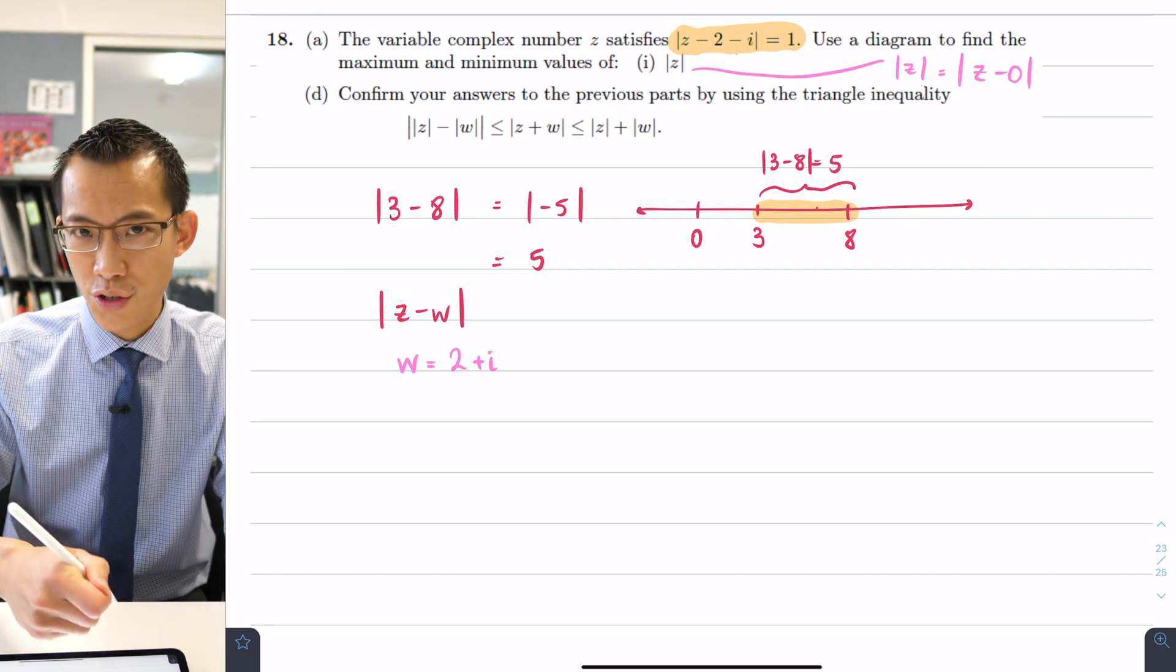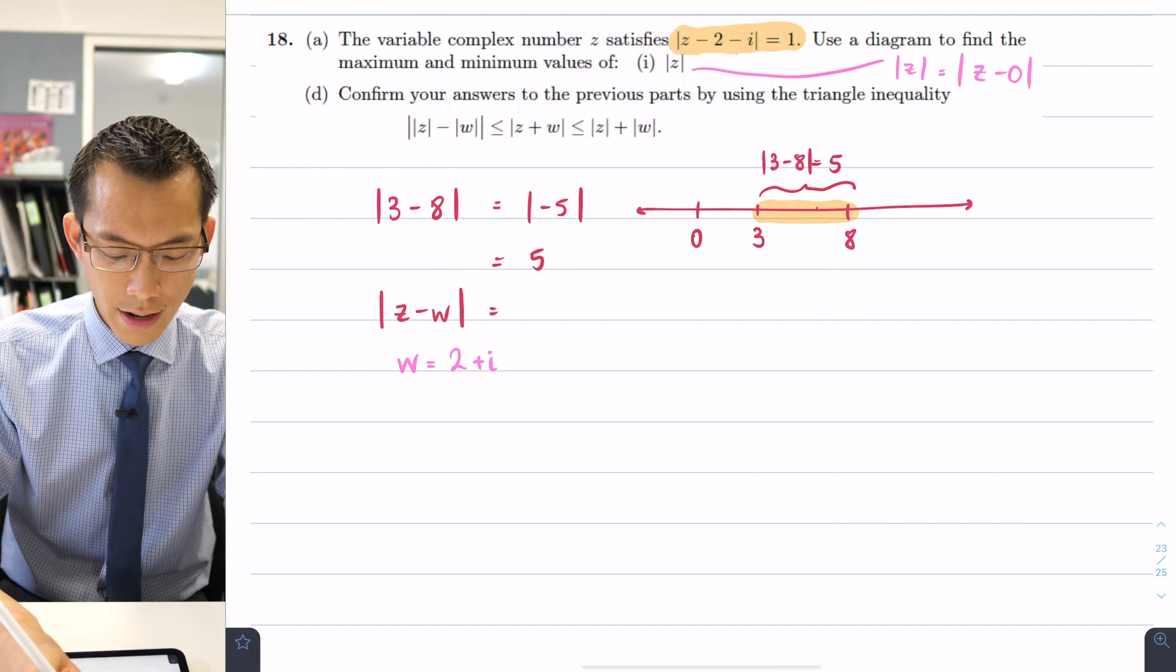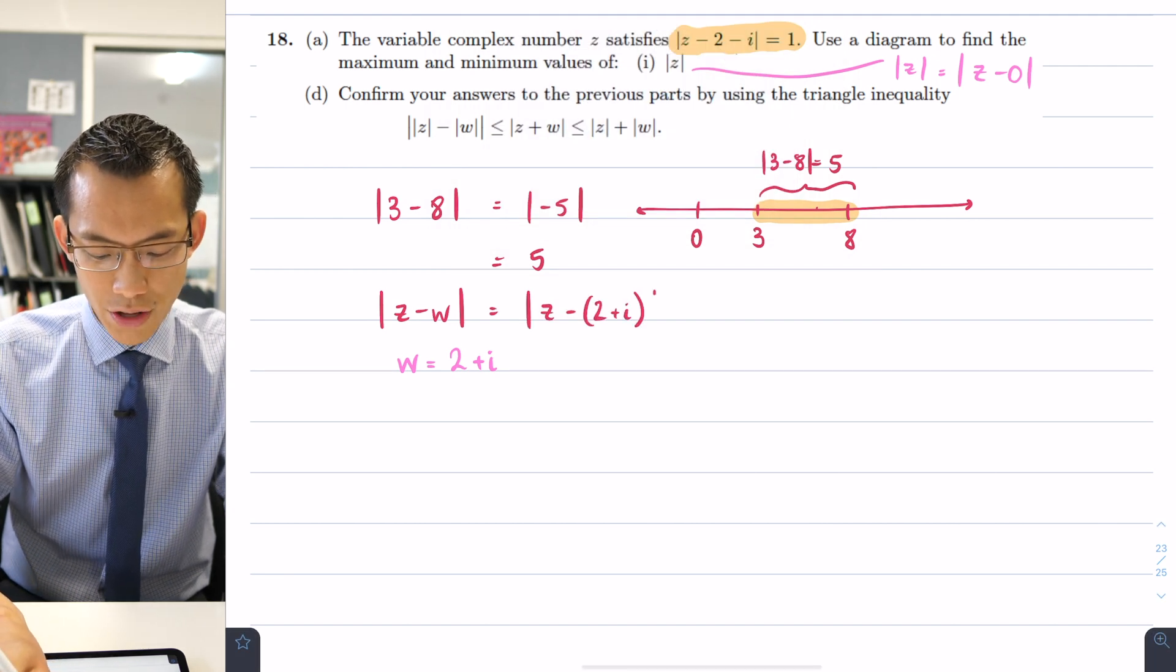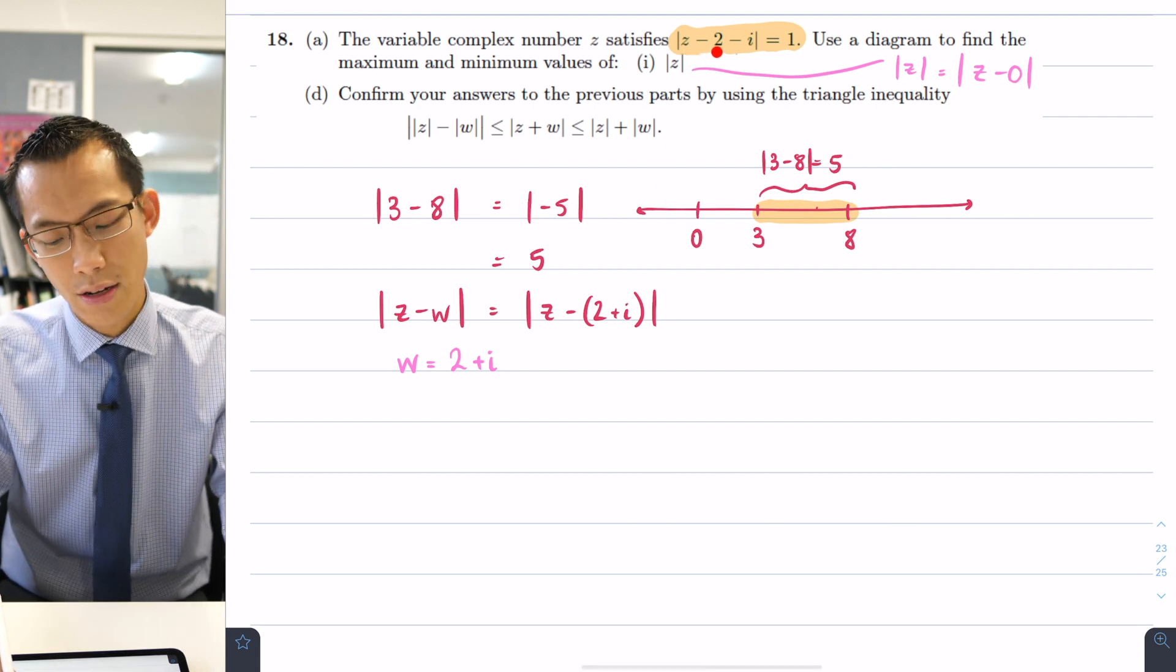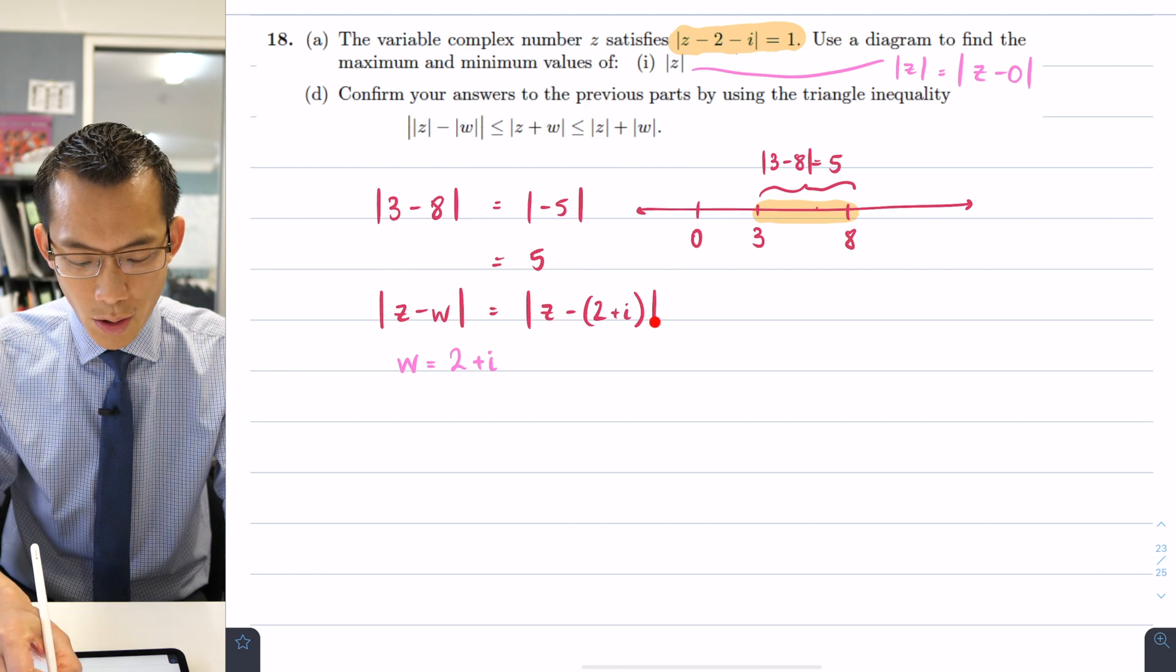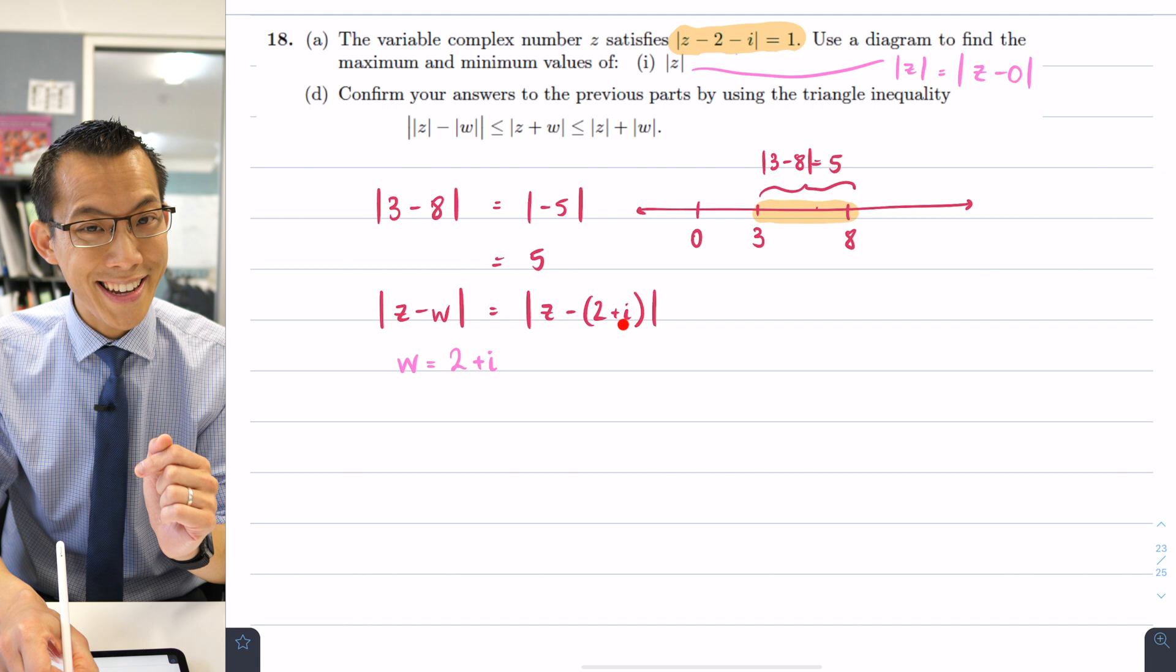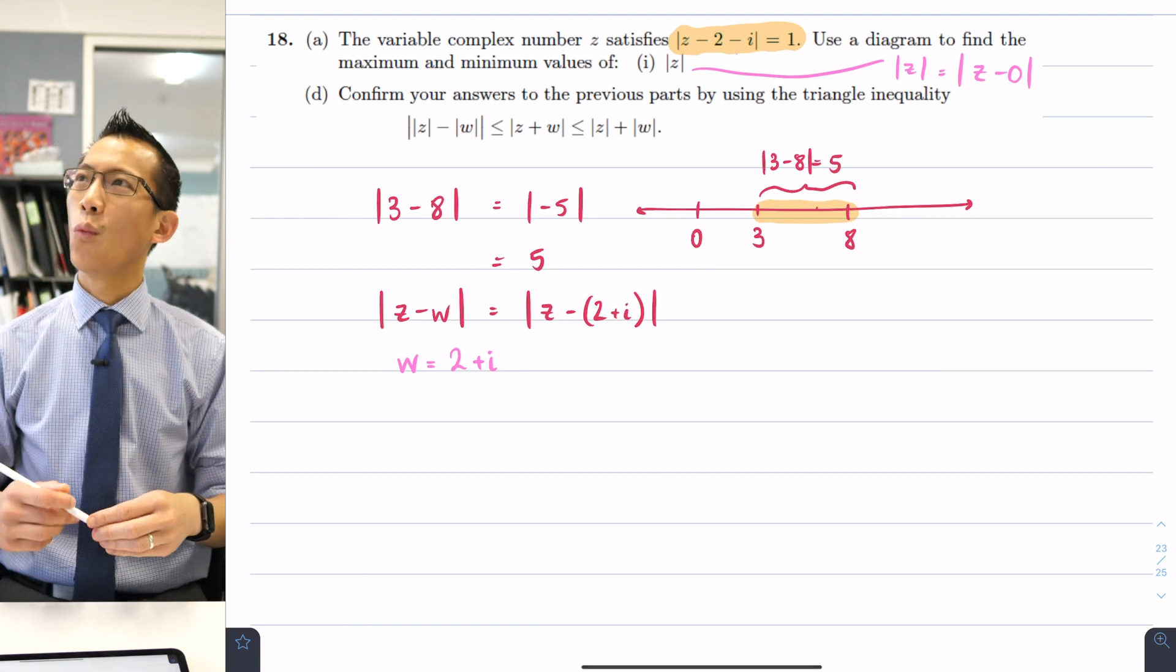Can you see that if I substitute 2 plus i into this line above what am I going to get? I'll get the absolute value of z take away 2 plus i. When you expand the brackets in here you're going to get z take away 2 take away i. So what we're saying is the distance from z to this point here 2 plus i should always equal 1. What is that?